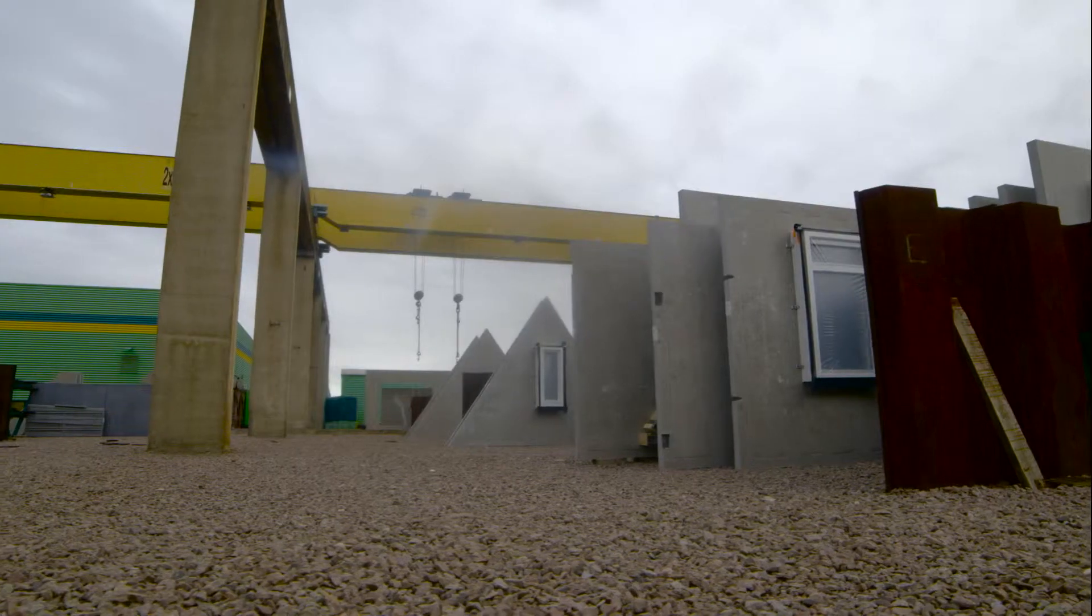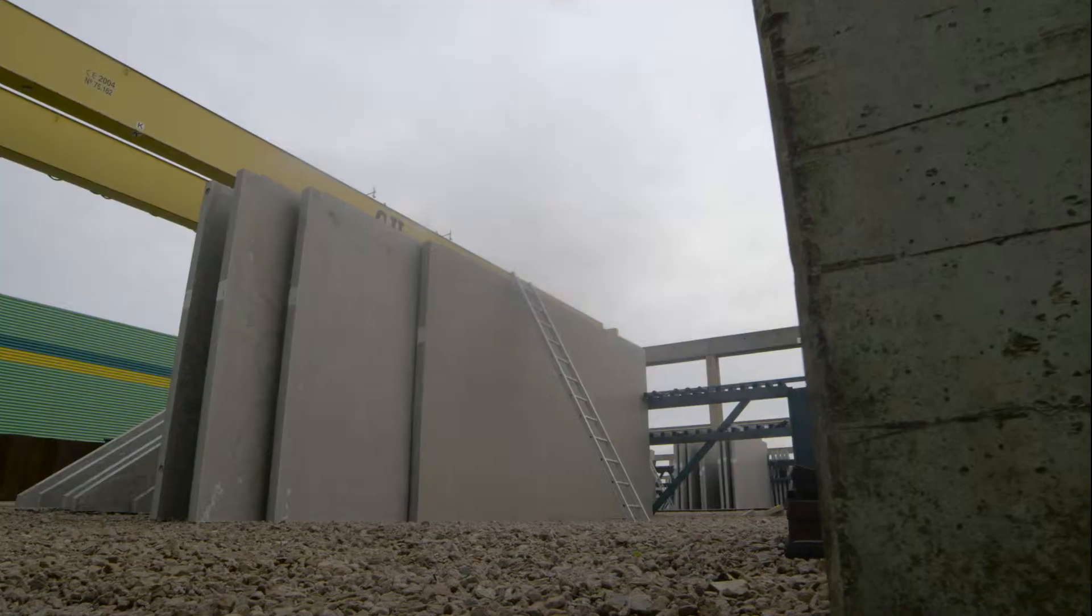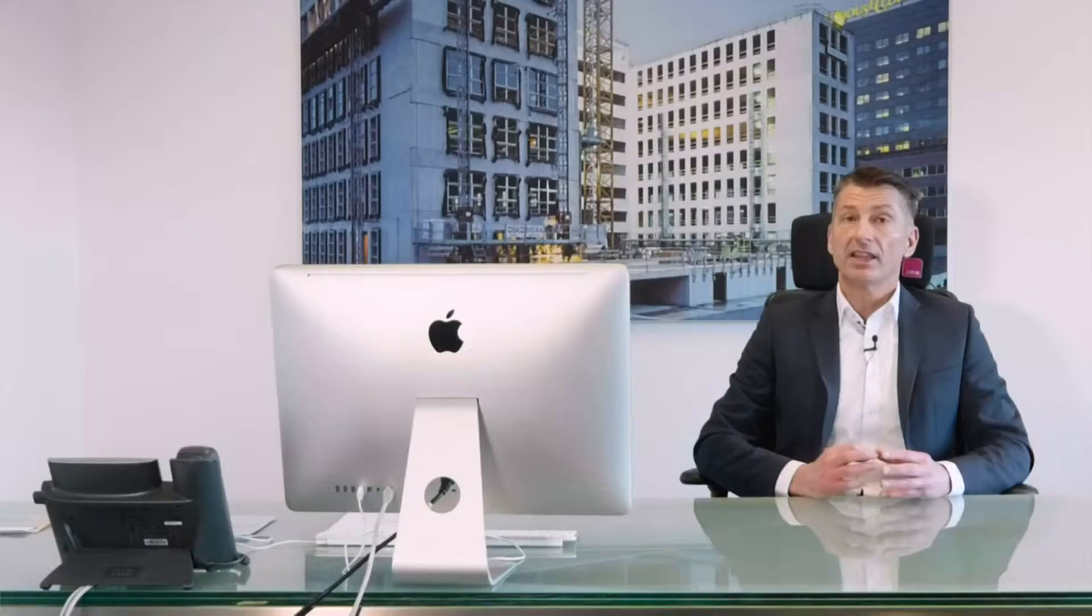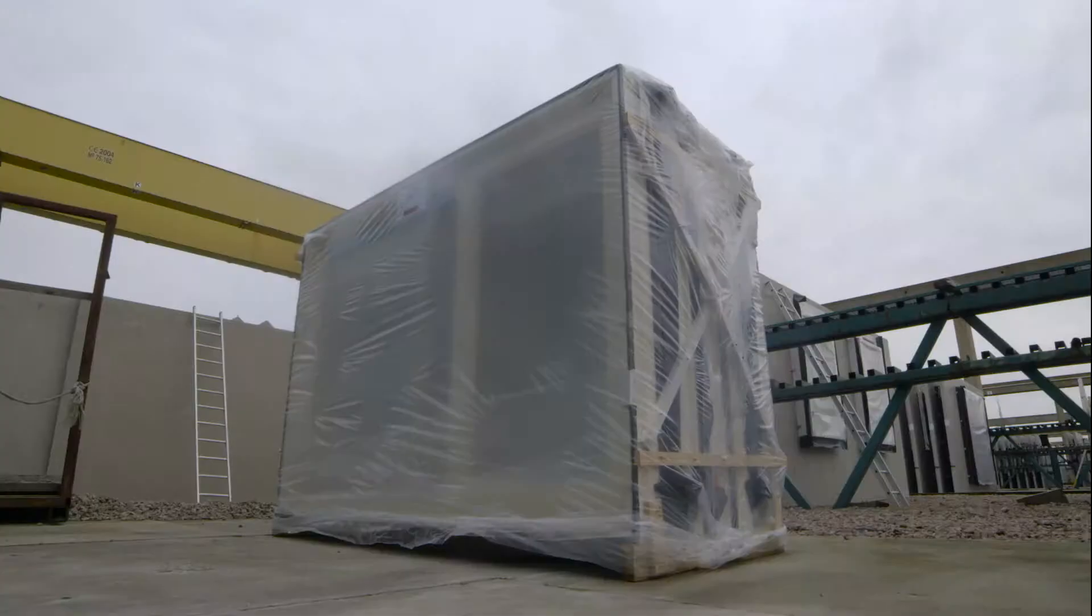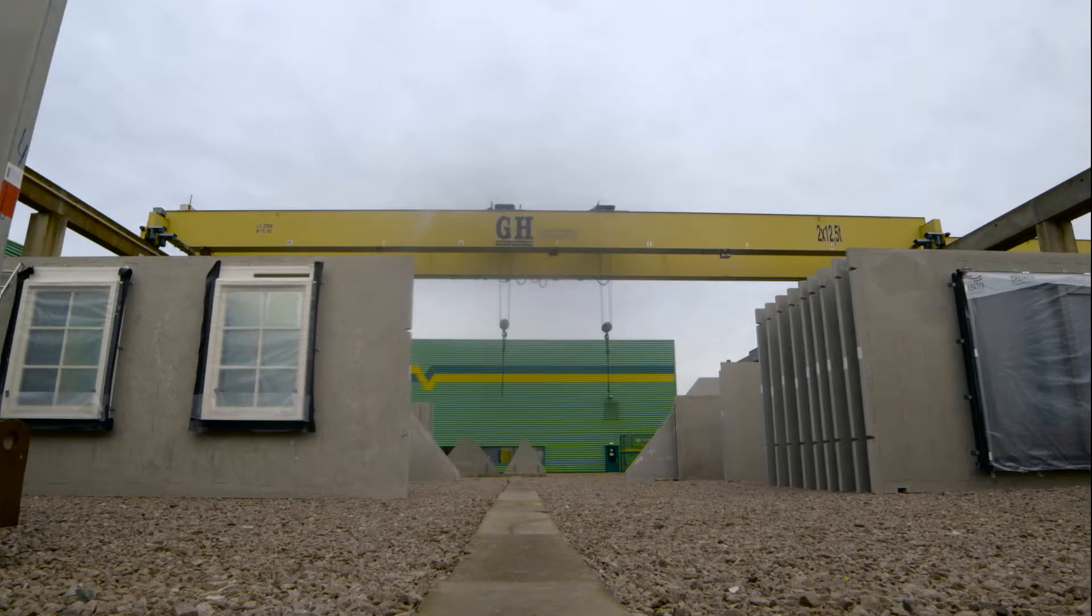The precast concrete elements for housing that we now produce are much more sophisticated than we used to make. They include made-to-measure reinforcement, door-and-window frames, all the wiring and the pipes.